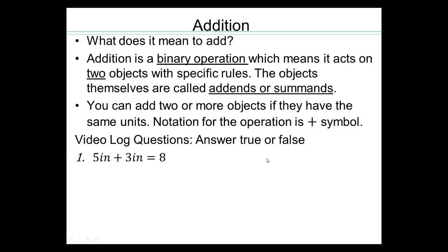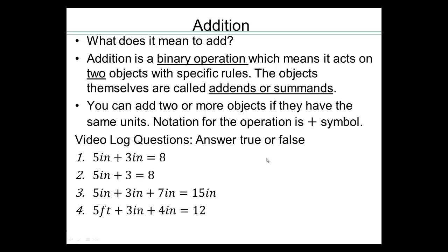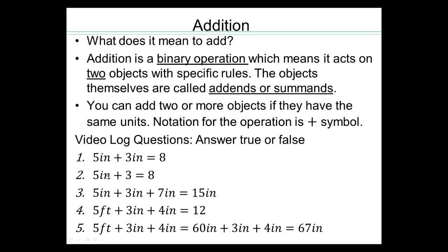Think about the following true and false questions and pause the video to answer them. The first answer would be false, because five inches plus three inches would be eight inches — the unit 'inches' is missing. So when you add quantities, the resulting quantity also has the same unit. Five inches plus three cannot be added because they do not have the same units.